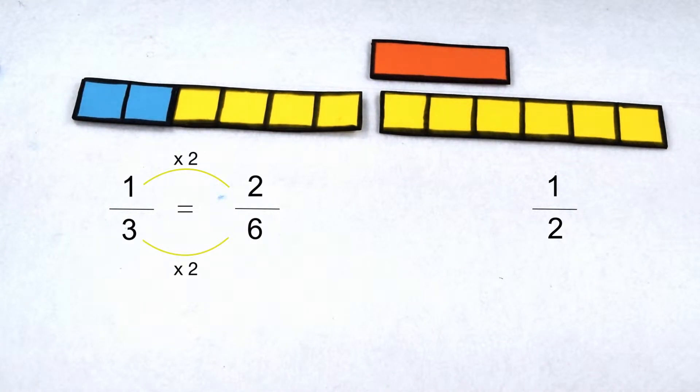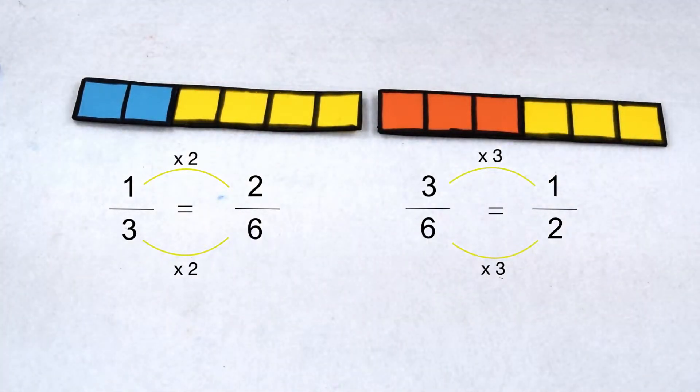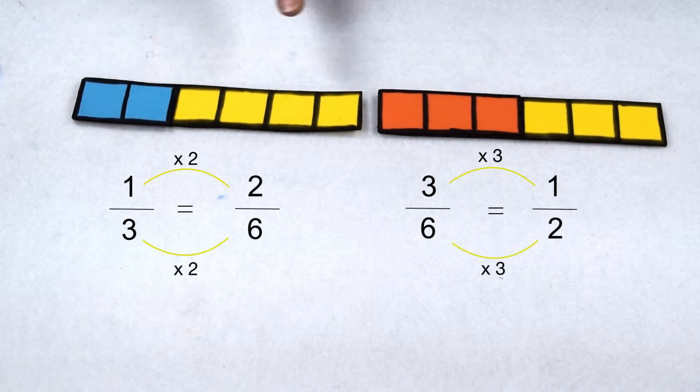For one-half, 2 times 3 gives me 6, so I also need to multiply my numerator by 3. 1 times 3 gives me 3. So now I have 2/6 and 3/6. We can see that two pieces is smaller than three pieces, so going back to our original fractions, we were correct, and that one-third is less than one-half.